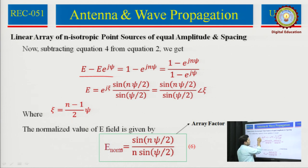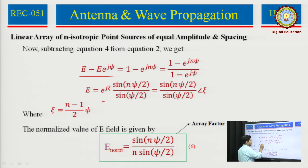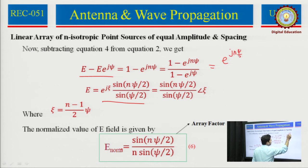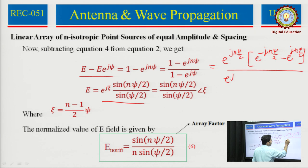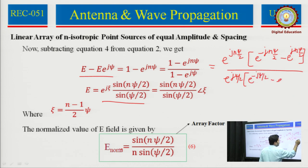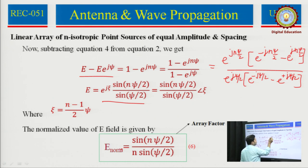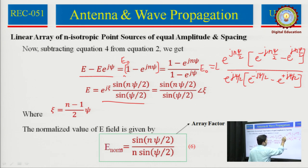When you equate this equation, E is taken out. So (1 - e^(j*psi)) goes to the denominator, and we find out the value. This expression can be further rewritten — we can take out e^(j*n*psi/2) as common. What remains is: e^(-j*n*psi/2) minus e^(+j*n*psi/2) in the numerator, and e^(-j*psi/2) minus e^(+j*psi/2) in the denominator, with amplitude factor E-naught also taken out. This expression is represented in this way.